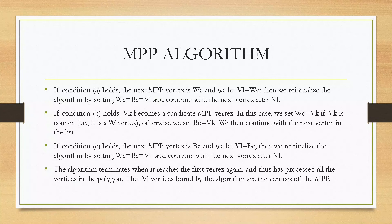If condition B holds, VK becomes a candidate MPP vertex. In this case, we set WC equal to VK if VK is convex — that is, it is a W vertex — otherwise we set BC equal to VK. We then continue with the next vertex in the list. If condition C holds, the next MPP vertex is BC and we let VL equal to BC. Then we reinitialize the algorithm by setting WC equal to BC equal to VL and continue with the next vertex after VL.